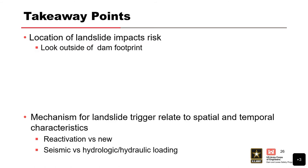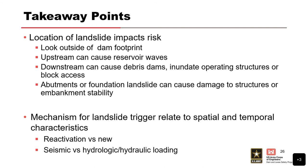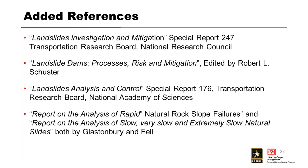Look outside of the dam footprint and upstream — Vajont is the example for that. Upstream can cause reservoir waves; downstream can cause debris dams, inundate operating structures, or block access. Abutments or foundations can cause damage to structures or embankment stability and thus cause catastrophic release, so abutment analysis is very important. Mechanisms for triggering landslides are typically related to seismic, hydrogeologic, or hydraulic loading. Additional references include 'Landslide Investigation and Mitigation,' 'Landslide Dams: Process, Risk and Mitigation,' 'Landslide Analysis and Control,' and 'Report on the Analysis of Rapid Natural Rock Slope Failures.'